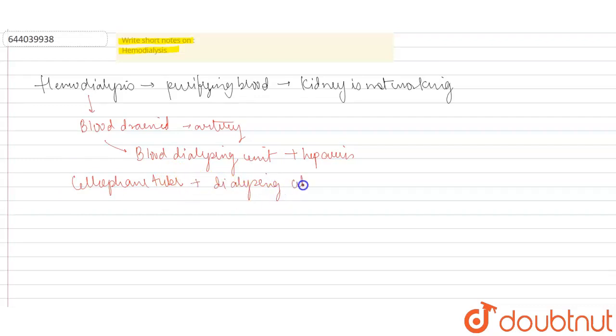And the concentration of this dialyzing fluid is same as that of plasma except for the nitrogenous waste. It does not have the nitrogenous waste. So the porous cellophane membrane which is present in the cellophane tube basically allows the passage of molecules.